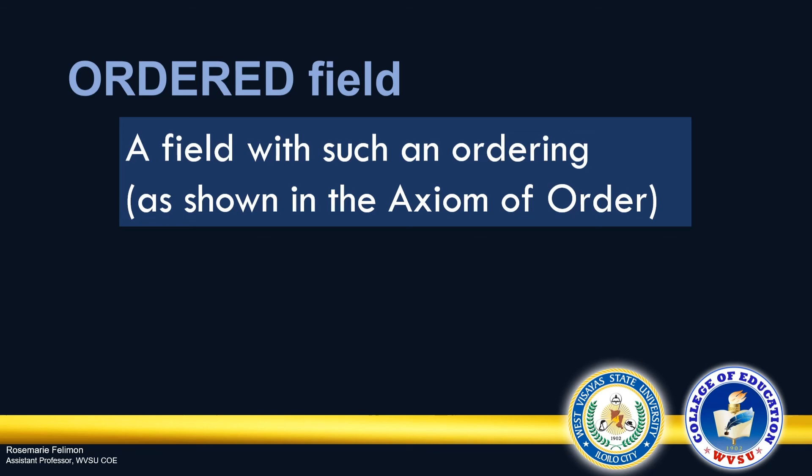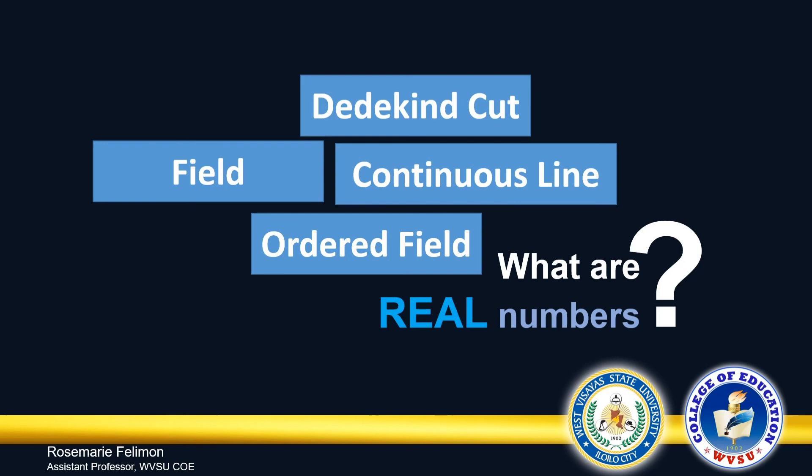Remember that the set of real numbers is an ordered field. So we asked a while ago, what are real numbers? So now we have answers. We can identify real numbers as Dedekind cuts. We can also use geometry to represent the set of real numbers.